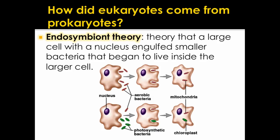Finally, let's discuss where eukaryotes came from — this is the endosymbiont theory. It's the theory that a large cell with a nucleus engulfed or swallowed a smaller bacteria that began to live inside the larger cell. If the bacteria were able to do cell respiration, those bacteria lived inside the big cell and acted like mitochondria. Later, that cell also swallowed photosynthetic bacteria that could do photosynthesis — those would be the ancestors of chloroplasts.